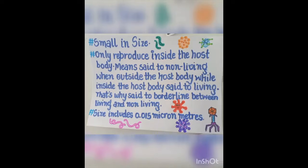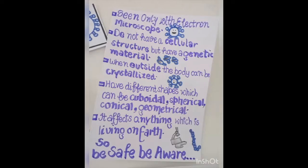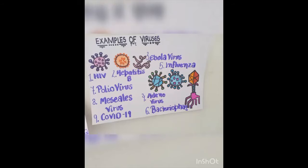Their size varies from 0.015 micrometers. They are seen only with a special type of microscope known as an electron microscope. They do not have a cellular structure but have genetic material like DNA. When they are outside the host body they can also be in crystallized form. They have different shapes which can be cuboidal, spherical, conical, or geometrical, and they can affect anything which is living on Earth.